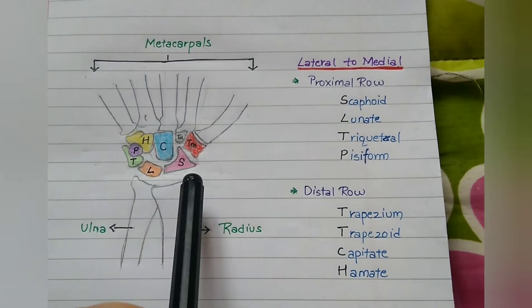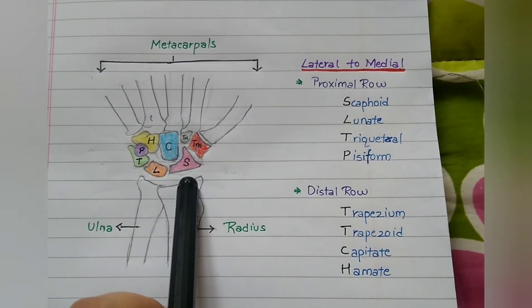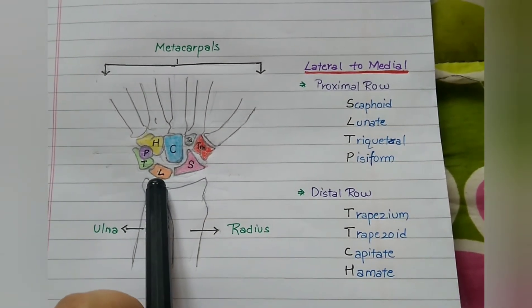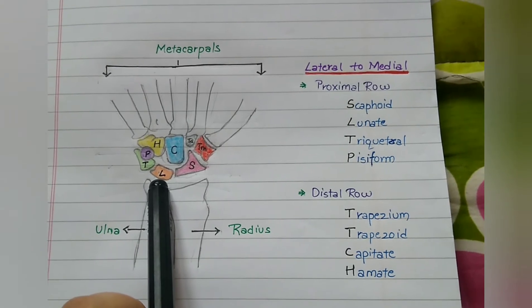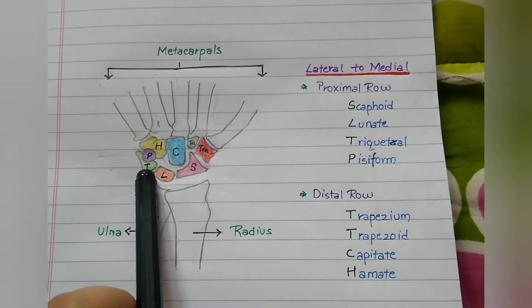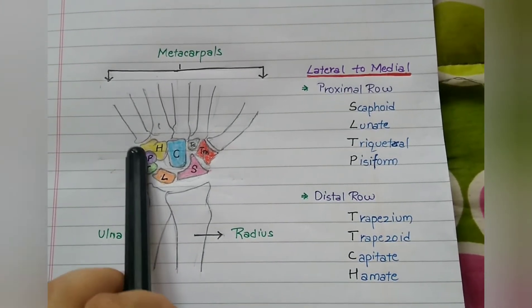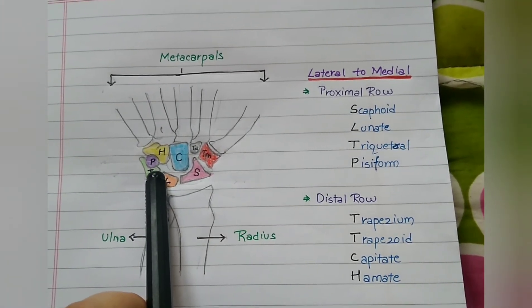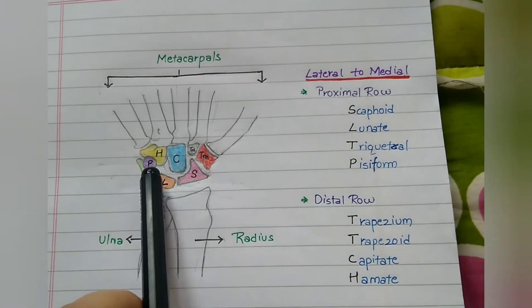In the proximal row, the first bone is the scaphoid which is on the thumb side, a boat shaped bone. The next bone is lunate which is a crescent shaped bone. The next bone is triquetral which is a pyramid shaped bone. A small round bone which sits on top of the triquetral is the pisiform.